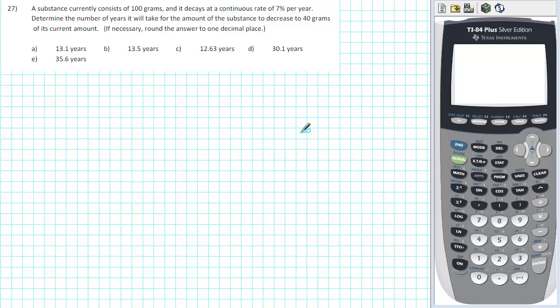To get a ballpark figure, recall the rule of 70. The rule of 70 can be used to quickly approximate the half-life. Just take 70 and divide by the decay rate as a percentage.